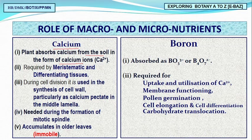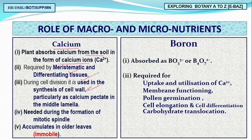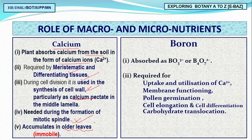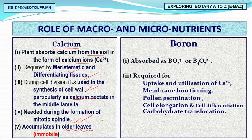Calcium is absorbed from soil as Ca²⁺ and is required by meristematic and differentiating tissues and during cell division. It is used in cell wall formation — calcium pectate and magnesium pectate play important roles in the middle lamella. Calcium is also required for mitotic spindle formation. Being an immobile element, calcium accumulates in older cells, so its deficiency appears in younger parts of the plant.